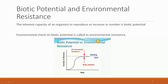Coming to biotic potential first and foremost, it is the inherent capacity of an organism to reproduce or increase in number. Every single organism has a tendency to reproduce and thus increase in number, and the rate at which it reproduces largely depends on environmental factors. If you remember, in environmental factors we discussed a bell-shaped curve where there is one zone where the growth of organisms is maximum.